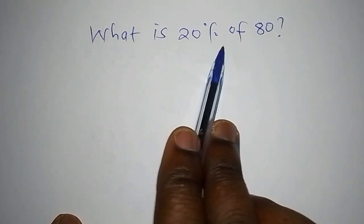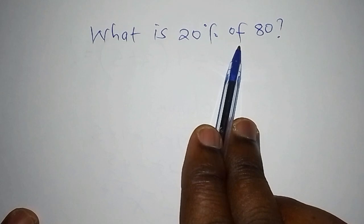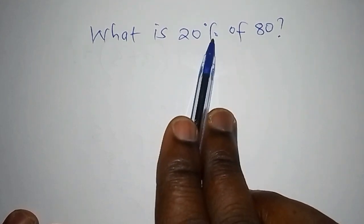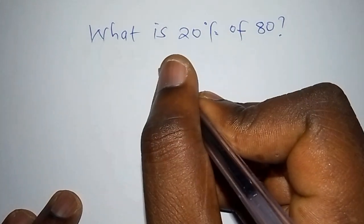There's a question that says: What is 20 percent of 80? As you can see this problem, the word 'of' has a meaning - 'of' means multiplication. So this 20 percent, you have to multiply by 80. This is just writing 20 multiplied by 80.